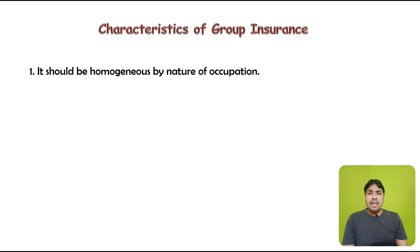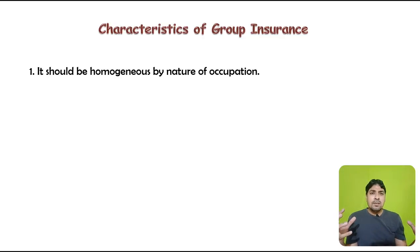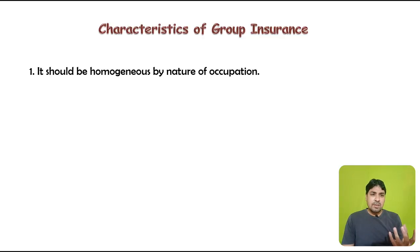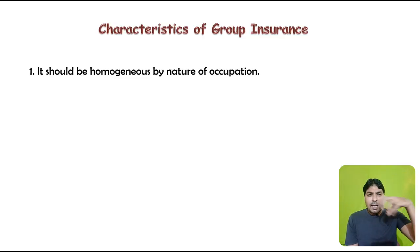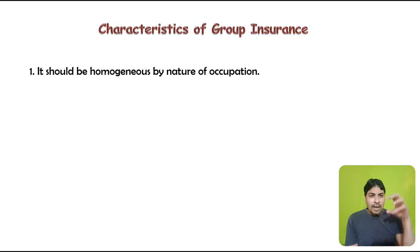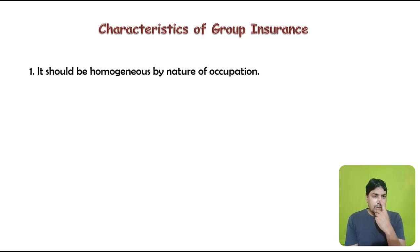The characteristics of a group insurance contract include, first, that it should be homogeneous by nature of occupation — the same kind of occupation must be present. For example, all members of a law college, from the principal to the peon, are part of the same institution and share a homogeneous nature of occupation, so they can be covered under a group insurance contract.